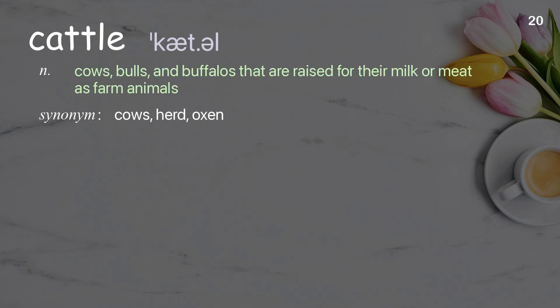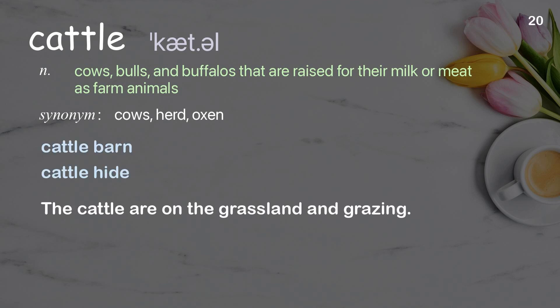Cattle: Cows, bulls, and buffaloes that are raised for their milk or meat as farm animals. Examples: Cattle barn, Cattle hide. The cattle are on the grassland and grazing.